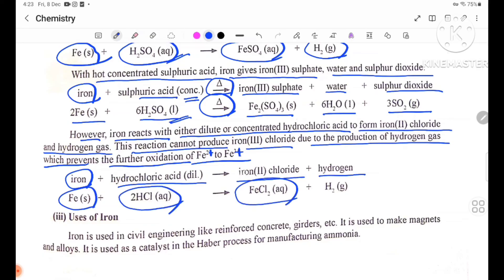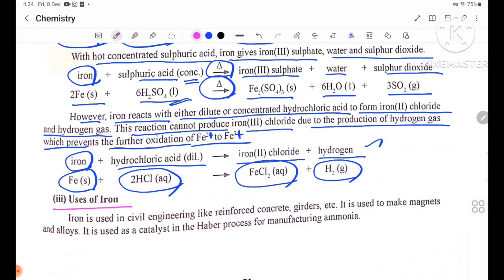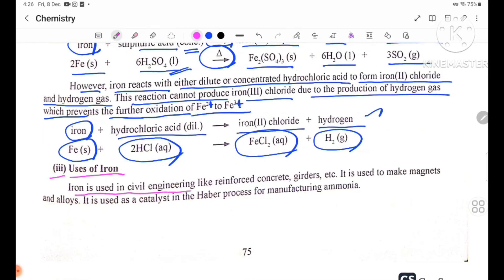Uses of iron: Iron is used in civil engineering like reinforced concrete, girders, etc. It is used to make magnets and alloys. It is used as a catalyst in the Haber process for manufacturing ammonia.